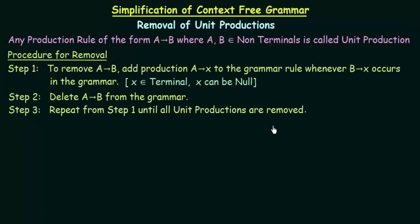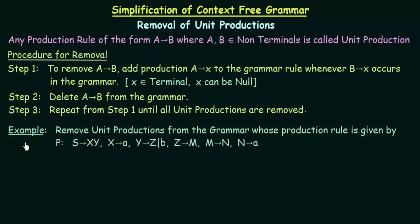Let us take a simple example to understand this in a better way. We have an example which says: remove unit productions from the grammar whose production rule is given by P, where S is the start symbol. The rules are: S gives XY, X gives A, Y gives Z and also B, Z gives M, M gives N, and N gives A. Our task is to remove the unit productions from this grammar.